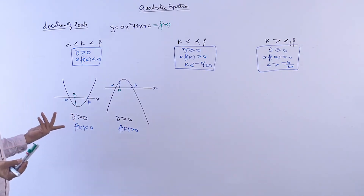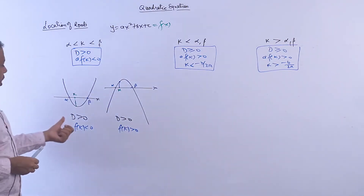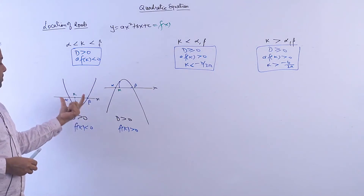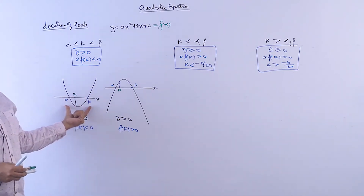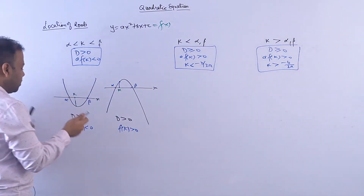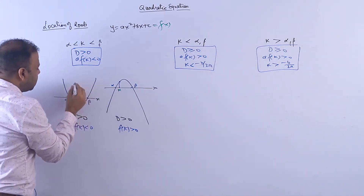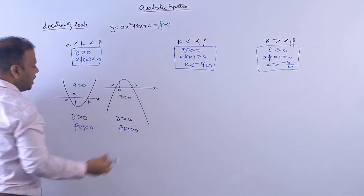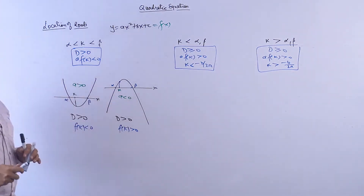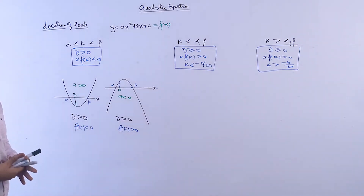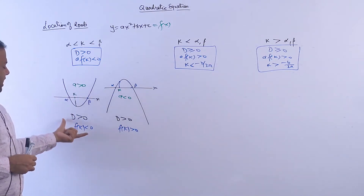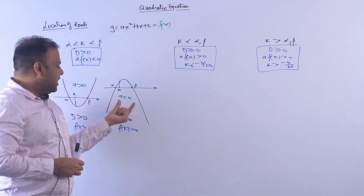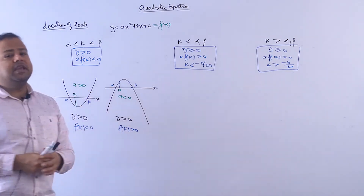But gradually this will be understood: above the x-axis means positive, and below the x-axis means negative. So it is clear that the point at k is below the x-axis, meaning f(k) is basically negative. But in the downward parabola case, the point at k is above the x-axis, meaning f(k) is positive.